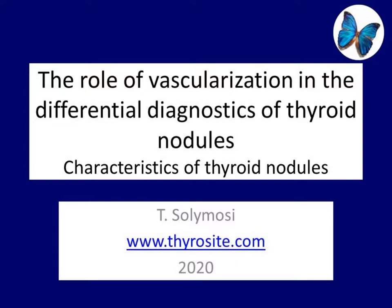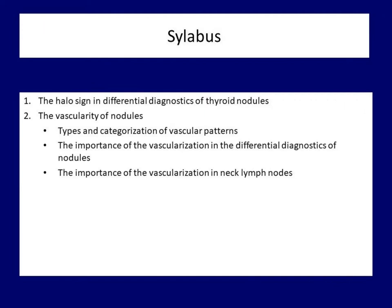We are now at the end of the discussion of ultrasound features of grayscale mode. In this lecture, we talk about the halo sign and the partly related ultrasound feature, the vascularization of thyroid nodules. Compared with the formerly presented suspicious characteristics, these share much less importance in the differential diagnostics, nevertheless in certain situations they may be of help.